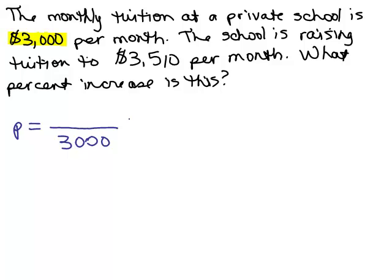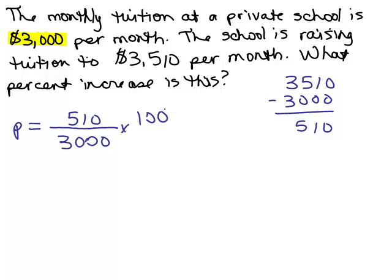Then we want to know how much it went up. That goes in the numerator. It's now 3,510, so it went up by $510. So this is the percent written as a fraction. We want to write it as a percent so let's multiply it by 100 percent so that our answer will be in terms of percents.